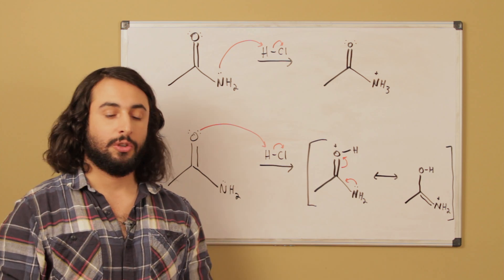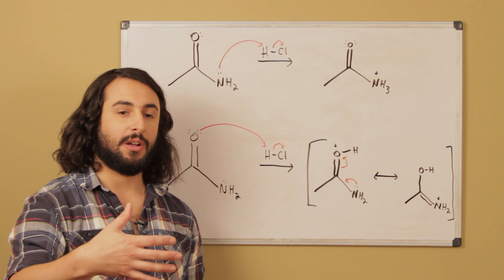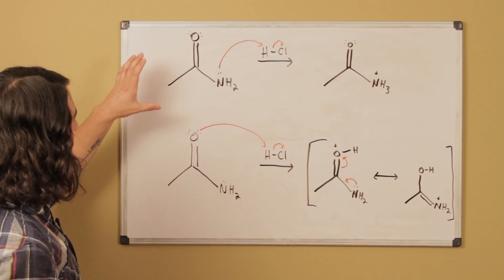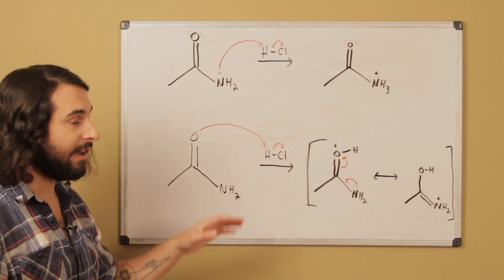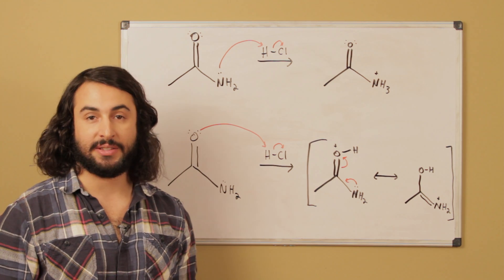So the question is, where does the proton go on the molecule? Because a proton acceptor is typically something like a lone pair, but there are two atoms on the molecule that have lone pairs. We have this carbonyl oxygen that has two lone pairs, as well as the nitrogen in the amino group that has a lone pair.